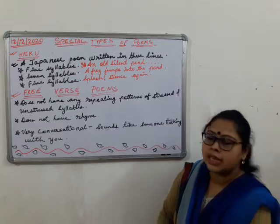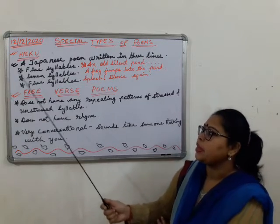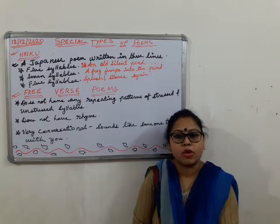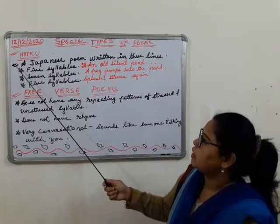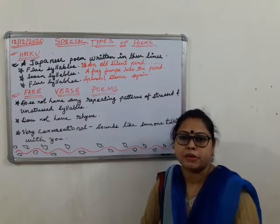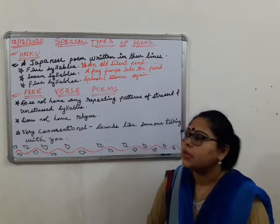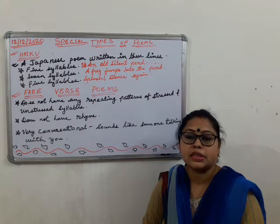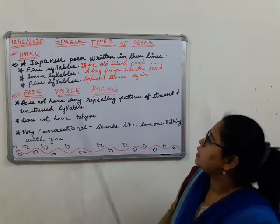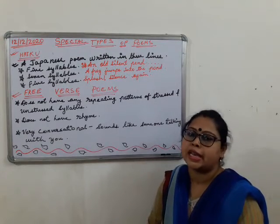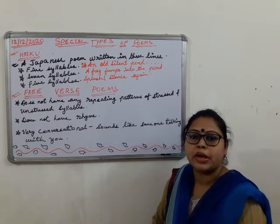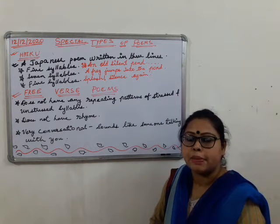This is the last type, which is known as special types of poems. The first one is haiku. Haiku is a Japanese poem written in three lines only. There are no more lines in this poem — only three-line poems are known as haiku, and this type of poem is written in Japanese.